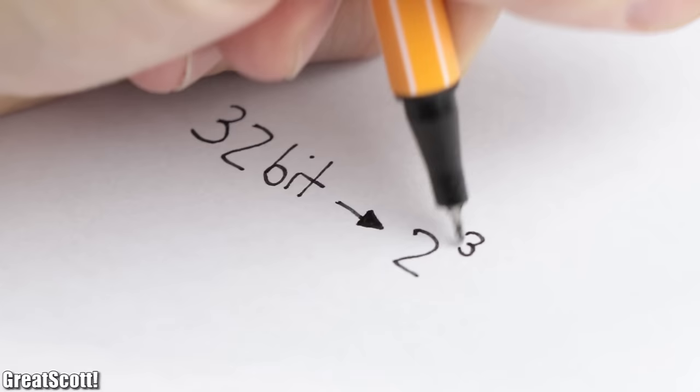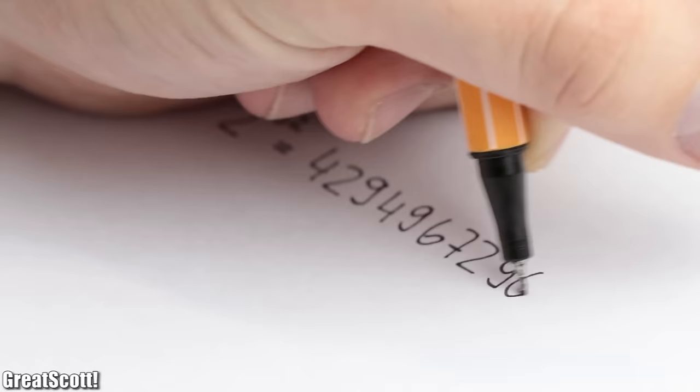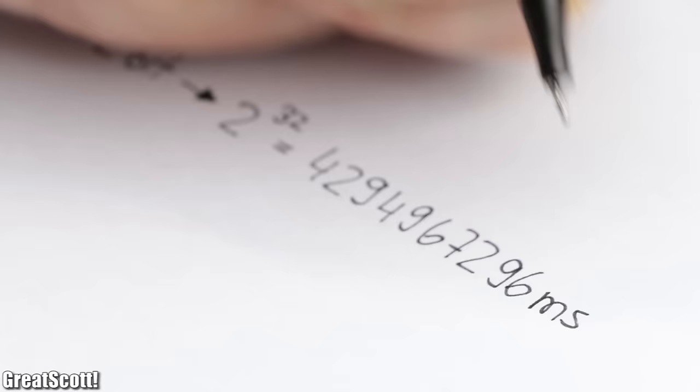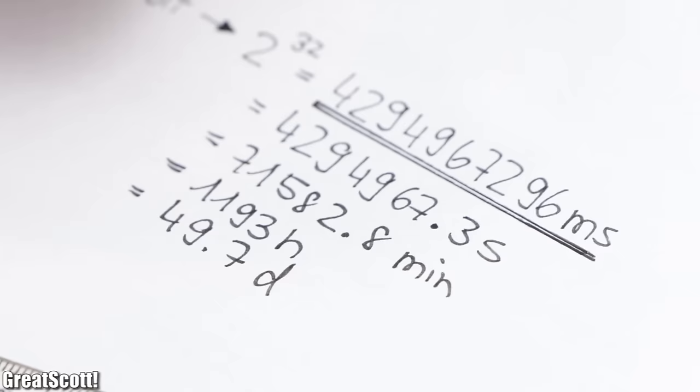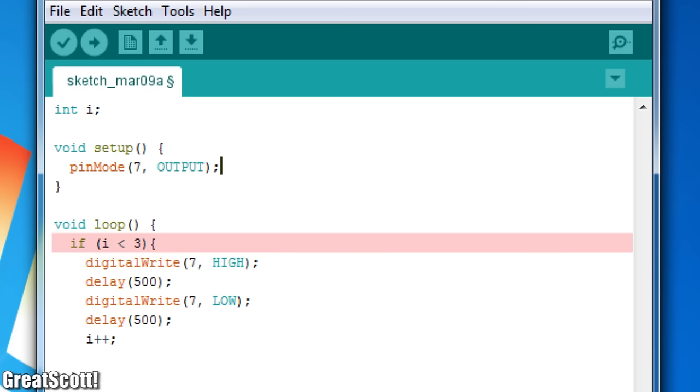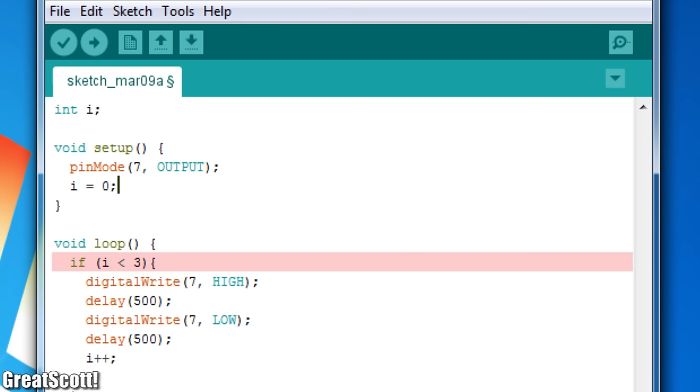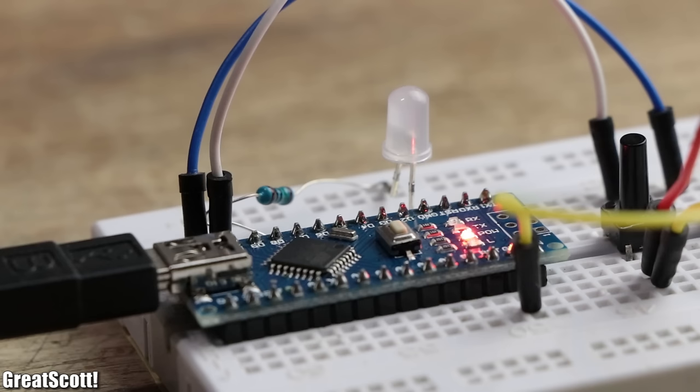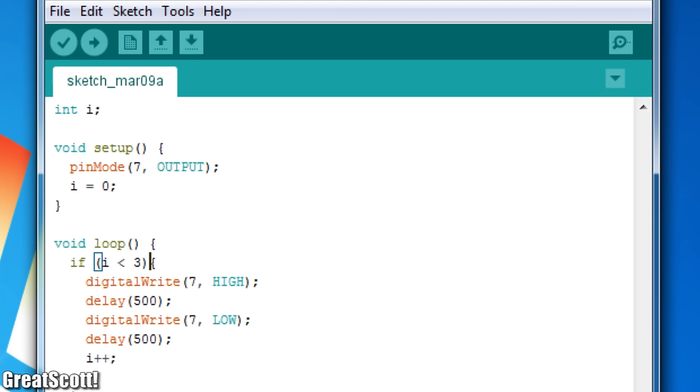And thus the maximum 32-bit size, which is a pretty big number to begin with, will be exceeded, aka overflow, after 49.7 days. But getting back to our example. By declaring the i variable with a start value of 0 in the setup section, the code compiled and uploaded properly and let the LED blink for 3 times and then did nothing else. Perfect.